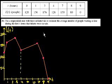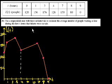Welcome back. We're doing Part B, problem number two. This says: use a trapezoidal sum with three subintervals to estimate the average number of people waiting in line during the first four hours.